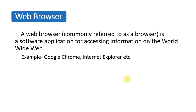Now let's see what a web browser is. On the internet and the World Wide Web, there are all these different files, and we need some application or source to view or access those files. In that process we use a web browser. A web browser, commonly referred to simply as a browser, is a software application for accessing information on the World Wide Web.